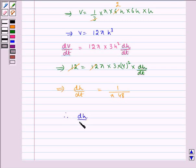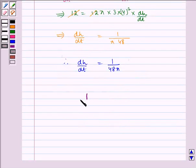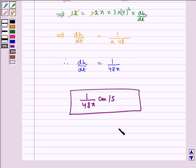Therefore, dh/dt = 1/(48π). Hence, height is increasing at the rate of 1/(48π) centimeter per second, which is the required answer. I hope you understood this question. Bye and have a nice day.